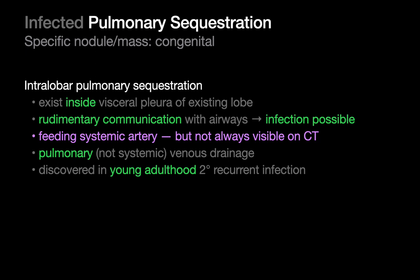Especially on an enhanced CT where the feeding artery is relatively large, that's going to be the giveaway. Not every intralobar sequestration is going to present specifically — in some cases the vessel may be too small to see, especially on a non-contrast CT. So infected pulmonary sequestrations, intralobar ones, can present specifically, but not every one does. The venous drainage of intralobar sequestrations is through the pulmonary venous drainage system. They're often diagnosed in young adulthood because the sequestration becomes infected over and over again.